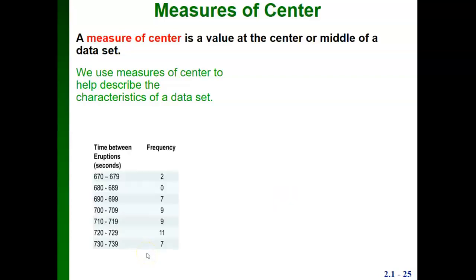Let's look at this data set, which is the time between eruptions for Old Faithful Geyser in Wyoming. If you look at the frequencies in this frequency distribution, it looks like a majority of the data values are down here between 700 and 730 or so. We could estimate where the center of this data set might be, and we'd probably say it was somewhere in this area between 710 and 730.